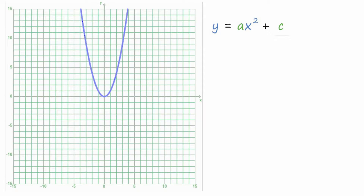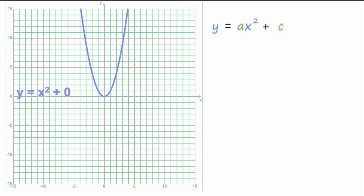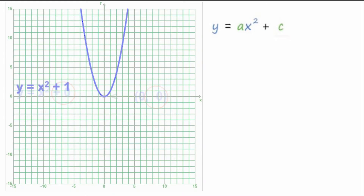First, let's look at Y equals X squared plus 0. I can show you that the vertex of the parabola at (0, 0) has a relationship between the constant term and the Y value for the vertex. If I show you Y equals X squared plus 1, you'll see that the parabola shifts up the Y axis to a vertex of (0, 1). The constant term plus 1 tells us the Y value for the vertex.